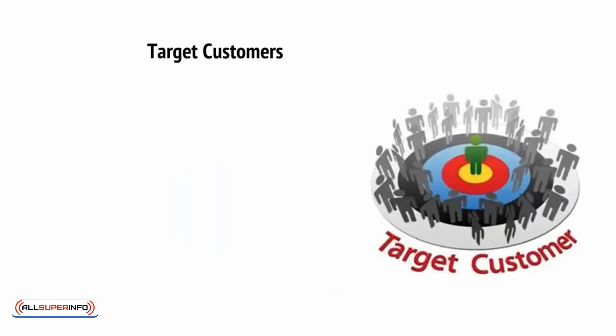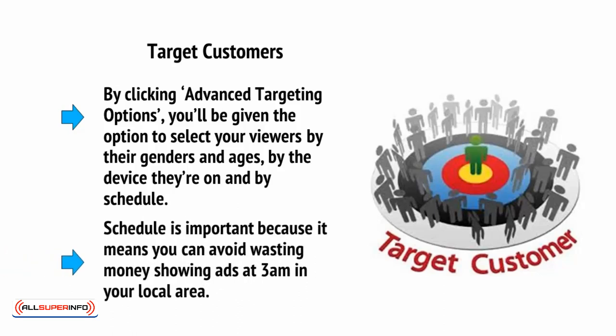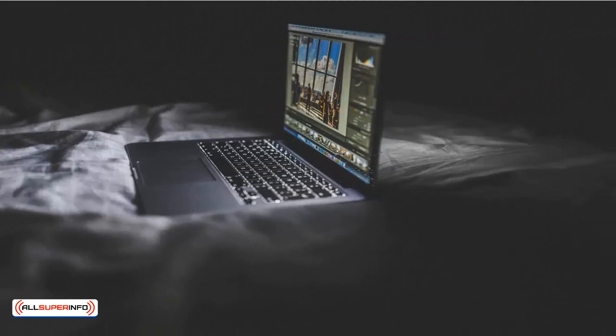Targeting allows you to specifically target the type of person you want for your ads even more. By clicking Advanced Targeting Options, you'll be given the option to select your viewers by their genders and ages — based on their Microsoft accounts — by the device they're on (for example, if you're selling an app, you might want to target mobile devices), and by schedule. Schedule is important because it means you can avoid wasting money showing ads at 3am in your local area. It also means you can get even more strategic and, for example, show ads only later in the evening — as it gets later and we become tireder, we actually become more impulsive and thus more likely to click buy on an advert.